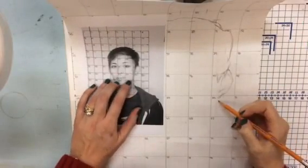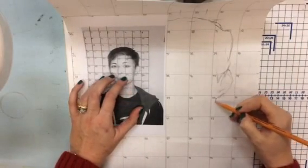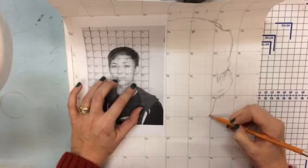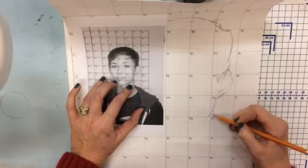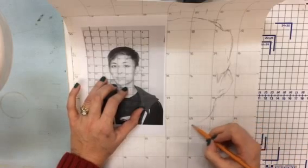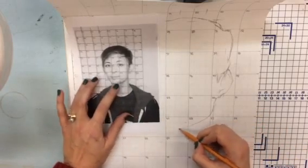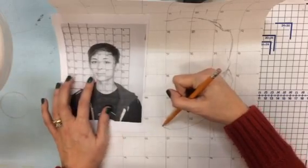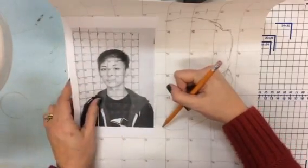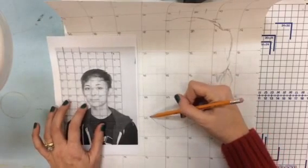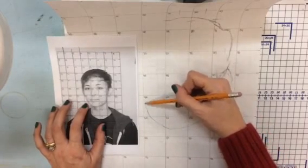In box 55 here we have the side of the neck and a little bit of the jawline. So the jawline comes in right at this corner. So just following along with the little squares, I can put in a fairly accurate portrait here.